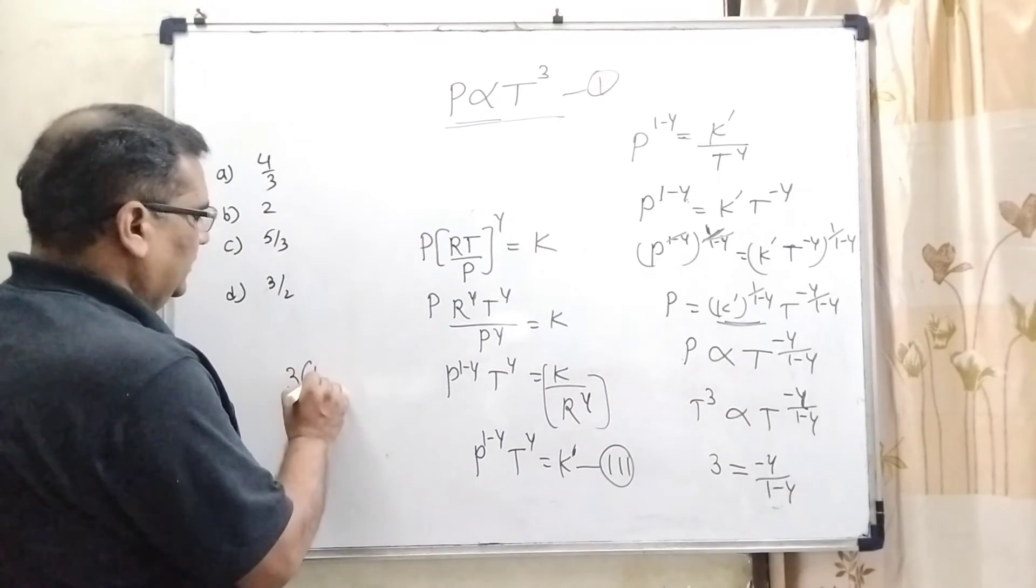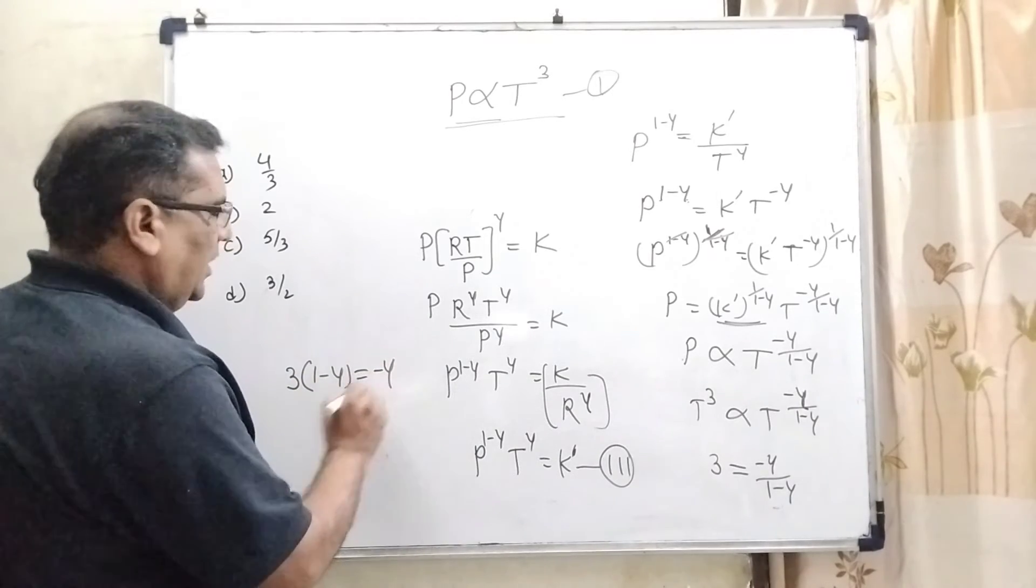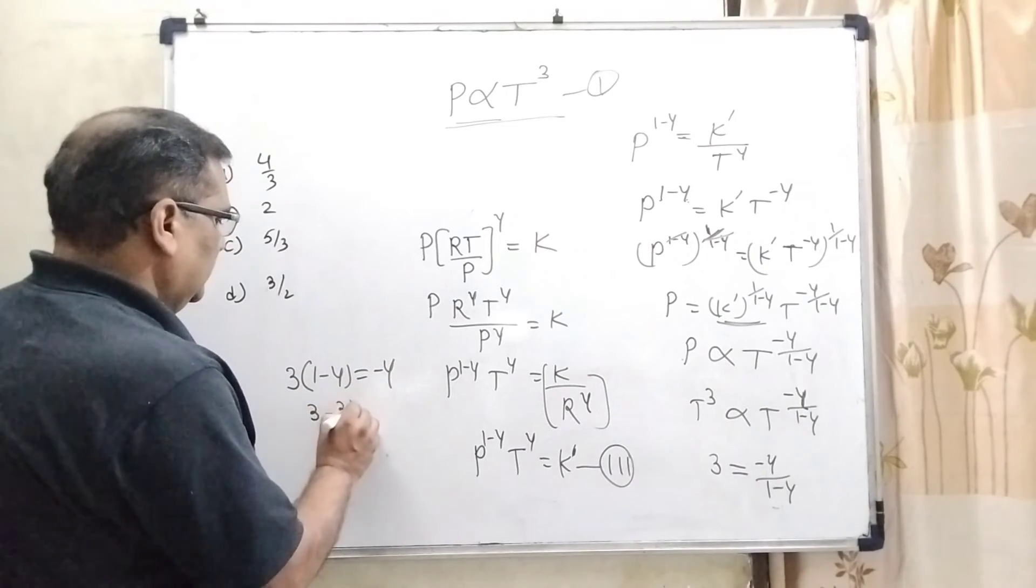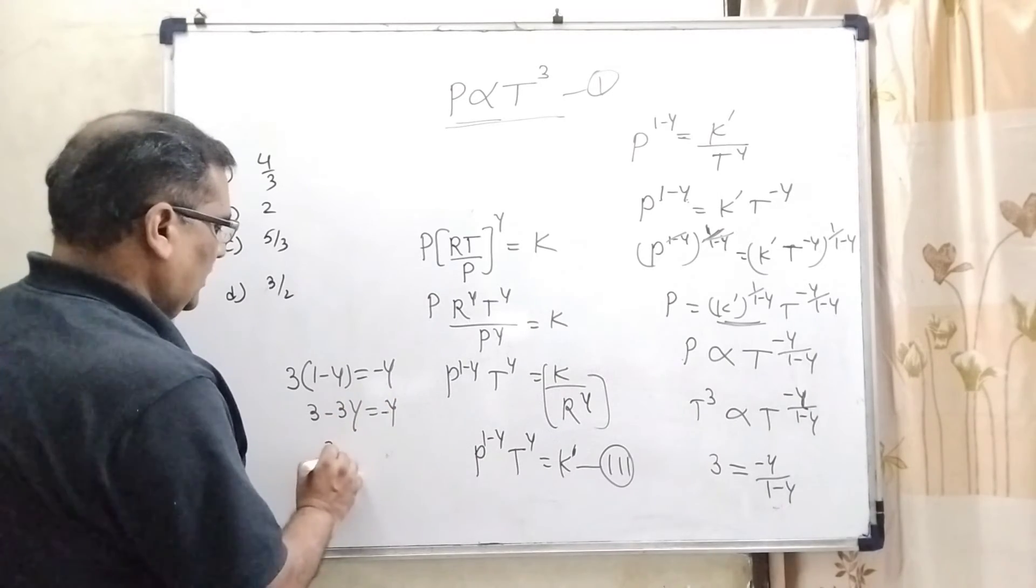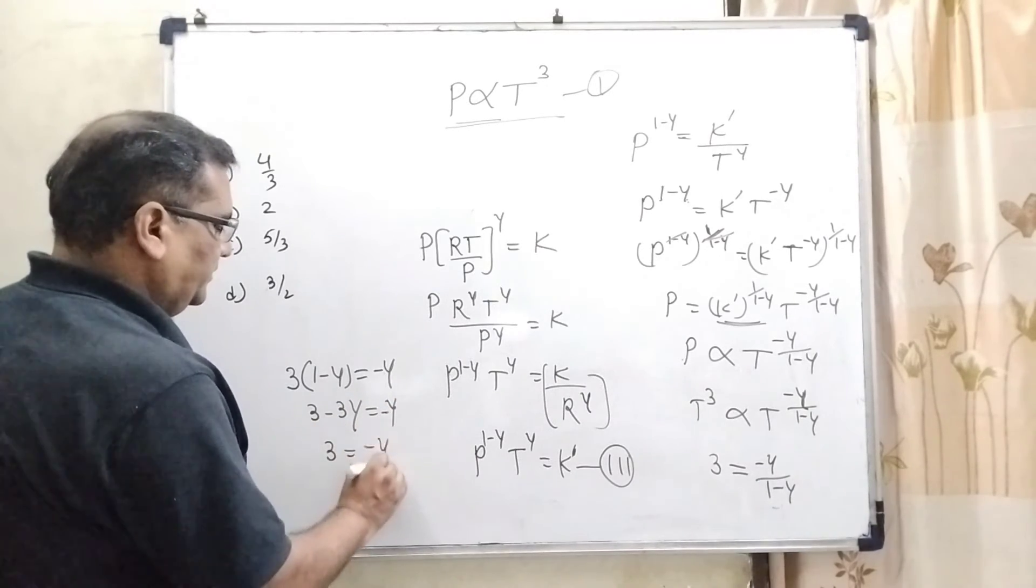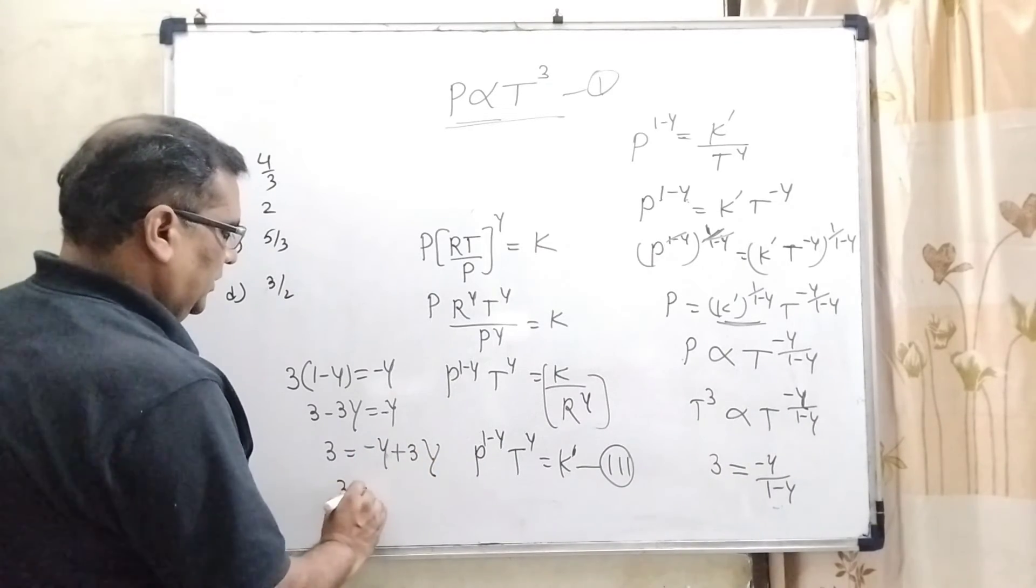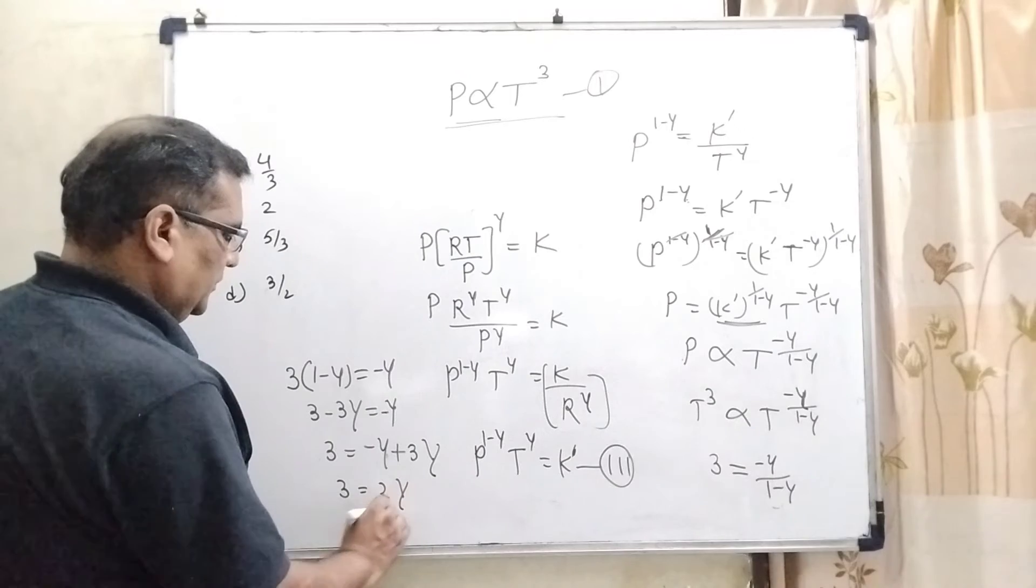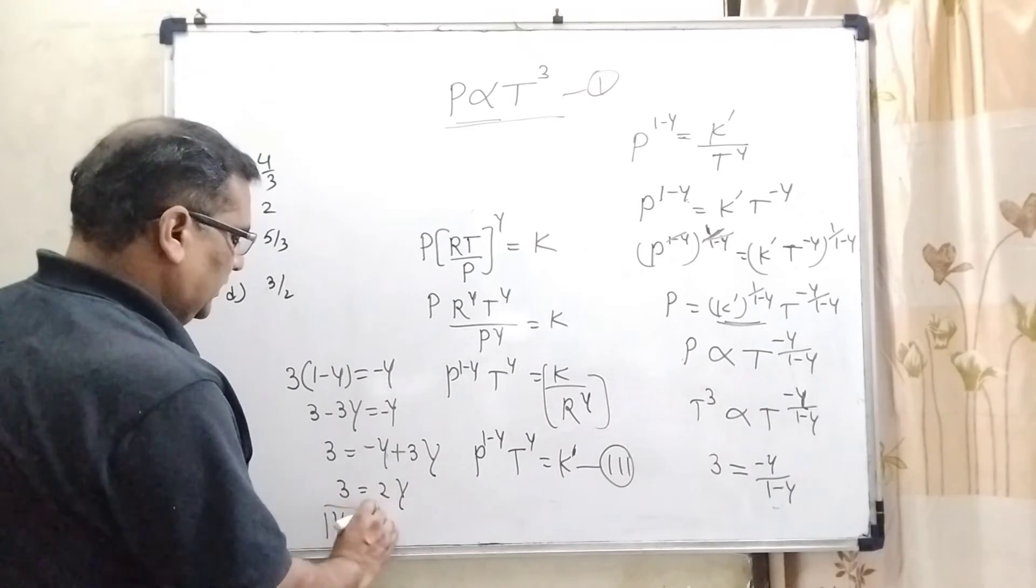Then, multiply 3 into 1 minus gamma equal to minus gamma. Transpose this term. Now, it becomes 2 gamma. So, 3 by 2, the value of gamma, that is 3 by 2.